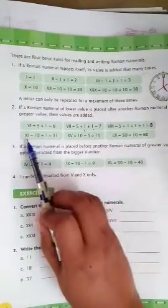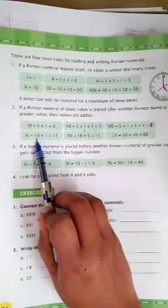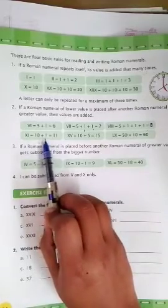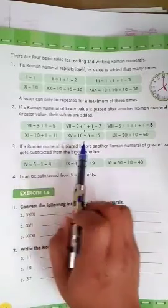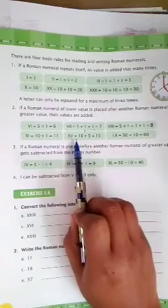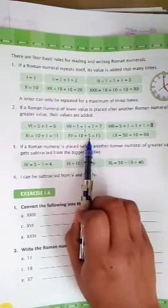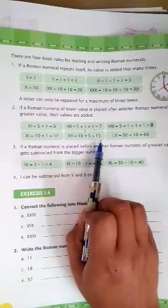Next is, X is used for 10 and I is used for 1. So, answer is 11. X is used for 10 and V is used for 5. So, 10 plus 5 answer is 15.